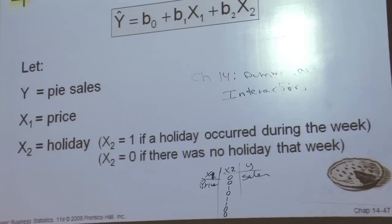It's possible, for example, that during the holiday period, the price has a larger impact on the sales, but during the non-holiday period, the price, or vice versa, does not have an impact on the sales, so that means the two variables are interacting on their joint impact on the y, in this case, on the pie sales.